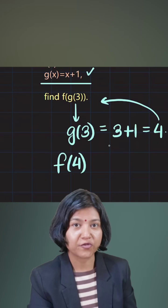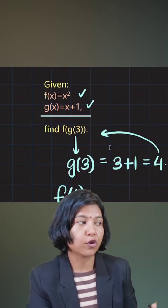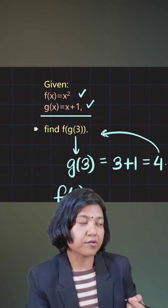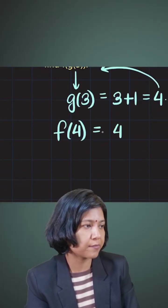The f function was to square the input. This function tells you to square the input, so therefore I'll just square the input, giving me the final answer as 16.